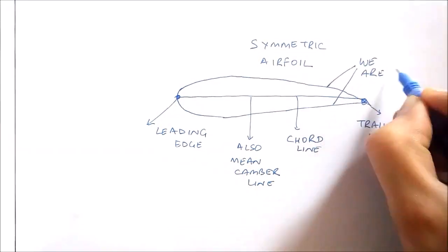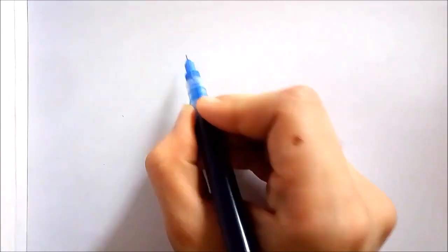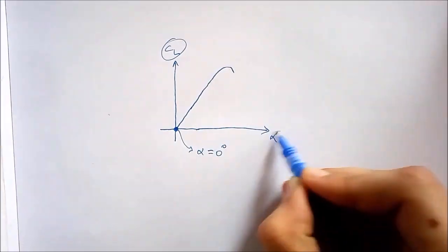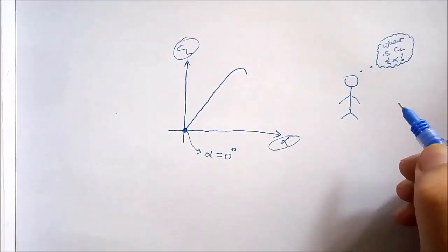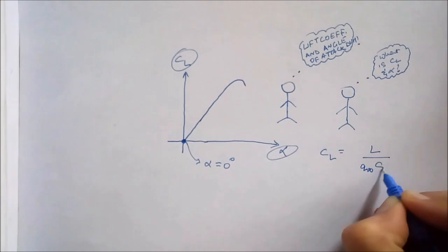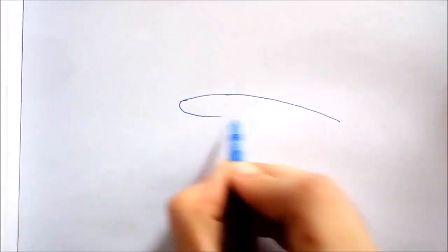Its Cl, or coefficient of lift versus alpha curve, looks something like this. Now due to symmetricity of the airfoil, it produces zero lift at zero degree angle of attack. Wait what? Angle of attack? Coefficient of lift? Well, coefficient of lift is defined as the ratio of lift force to product of dynamic pressure and platform area. And angle of attack is basically the angle between the chord line and the free stream direction of the air.